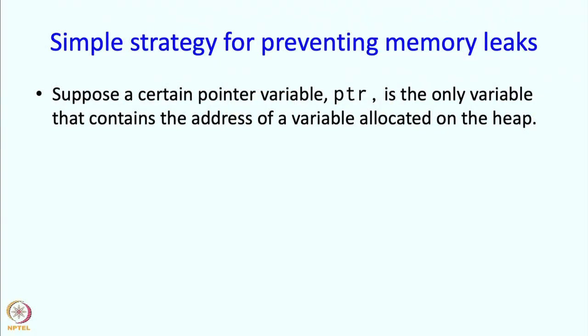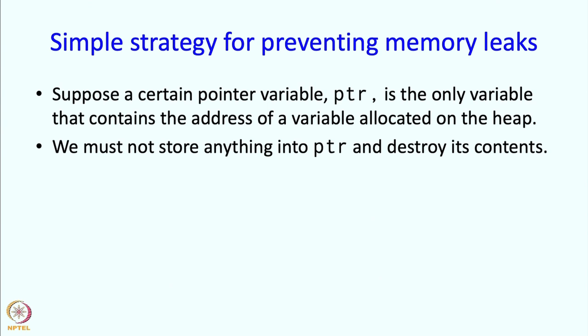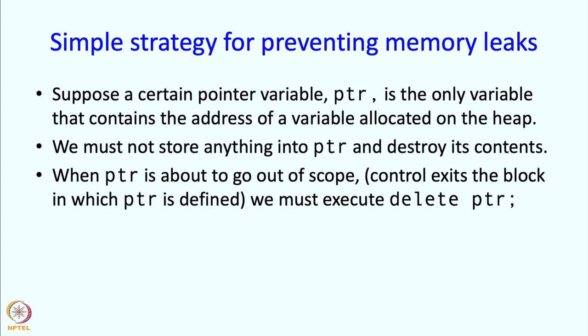Here is a simple strategy for preventing memory leaks. Suppose a certain pointer variable PTR is the only variable that contains the address of a variable allocated on the heap. We must not store anything into PTR and destroy its contents, because that would be a memory leak. And if PTR is about to go out of scope — say because control exits the block in which PTR is defined — we must execute delete PTR. These are two rules to keep in mind, and if we follow them, we can be sure there are no memory leaks.